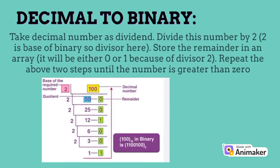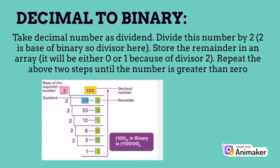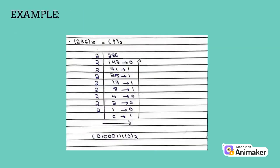Decimal to binary. Take the decimal number as dividend and divide it by 2 — the base of binary, so the divisor here. Store the remainder in an array; it will be either 0 or 1 because of divisor 2. Repeat the above two steps until the number is greater than 0. Here is an example of decimal to binary conversion.